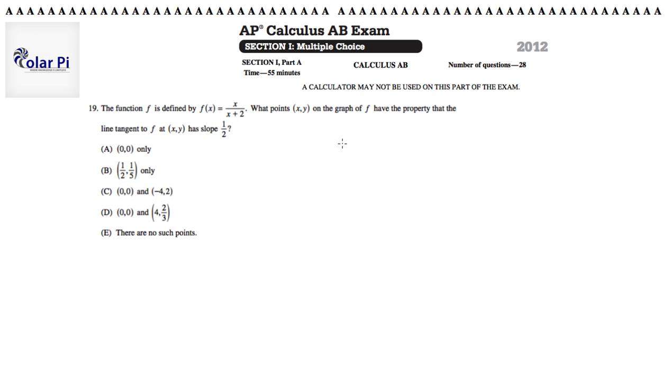So, since we have that f of x is equal to x over x plus 2, and I don't want to do quotient rule, I could do product rule if I write this as x times x plus 2 to the negative 1. You could do quotient rule. You'll get to the same place I'm going to get to.